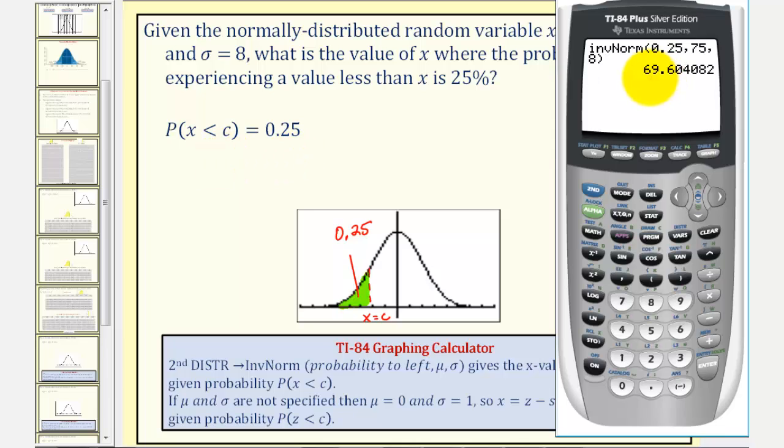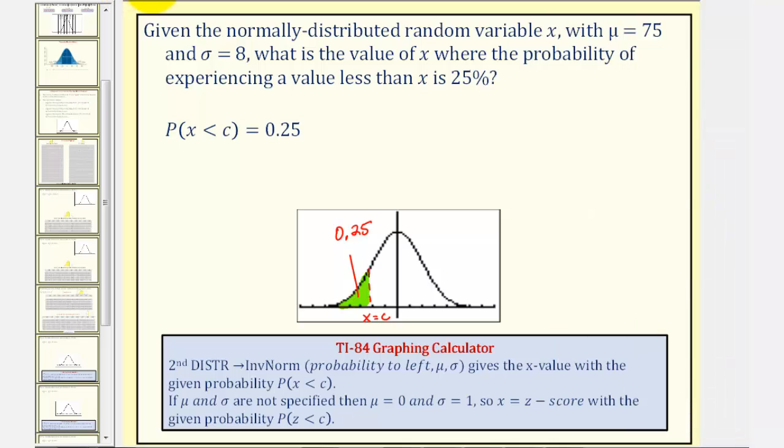So c is approximately 69.6, which means the probability of x being less than 69.6 is approximately 25 percent. I hope you found this helpful.